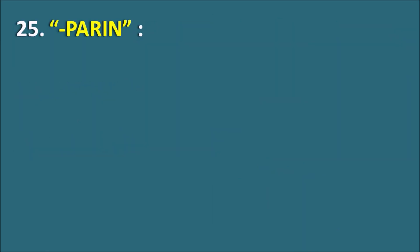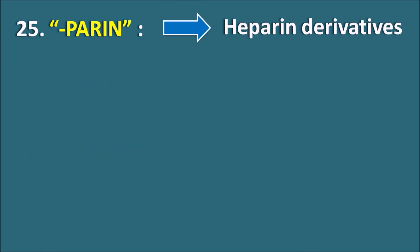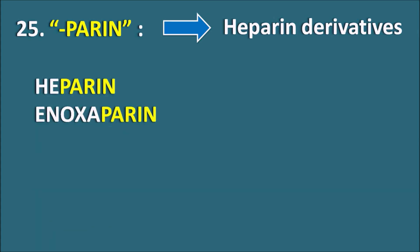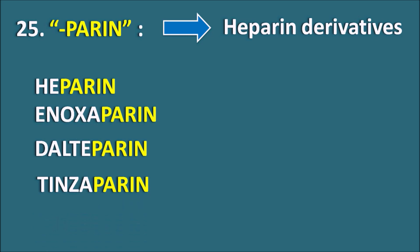The 25th suffix is Parin. Parin indicates they are heparin derivatives. We have drugs like Heparin, Enoxaparin, Dalteparin, and Tinzaparin. All have the suffix Parin. Heparin is of high molecular weight, while Enoxaparin, Dalteparin, and Tinzaparin are low molecular weight heparins.